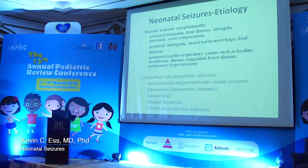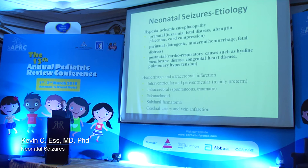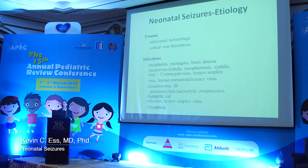Other causes besides HIE include various hemorrhages, which can certainly cause many seizure problems—interventricular and periventricular issues in the preterm population. As you get into older neonates, you see more from subarachnoid or subdural hematomas, which should prompt an imaging evaluation of these babies. Trauma can also cause stroke with cortical vein thromboses. A huge list of infections involving the brain can certainly cause seizures, with the most important being beta-hemolytic streptococcus as well as various viruses and TORCH infections.